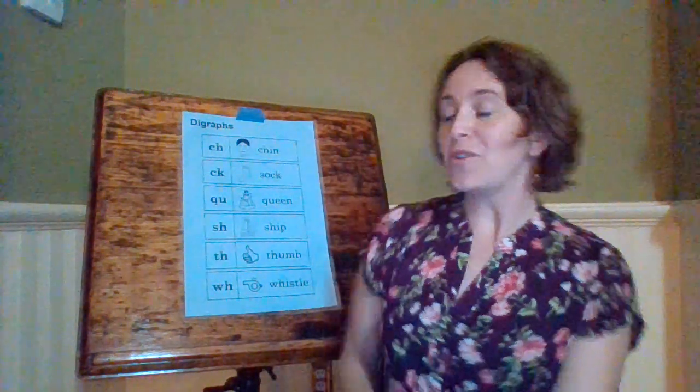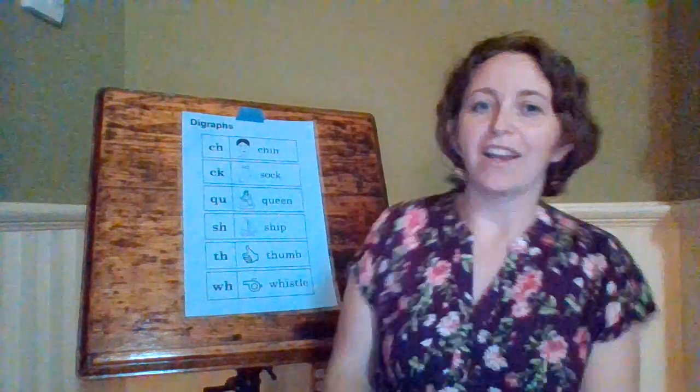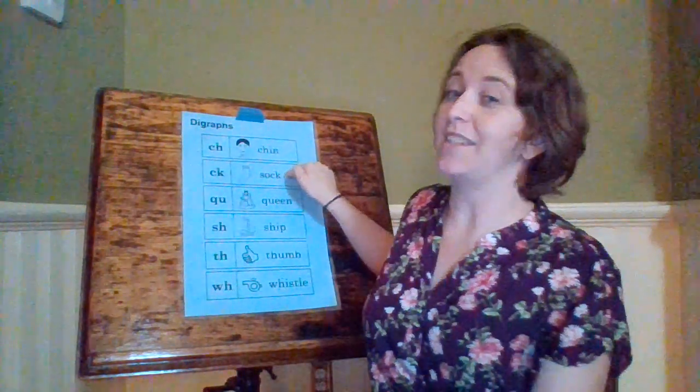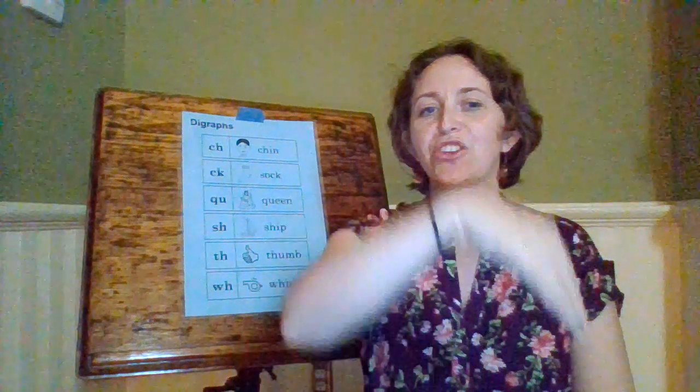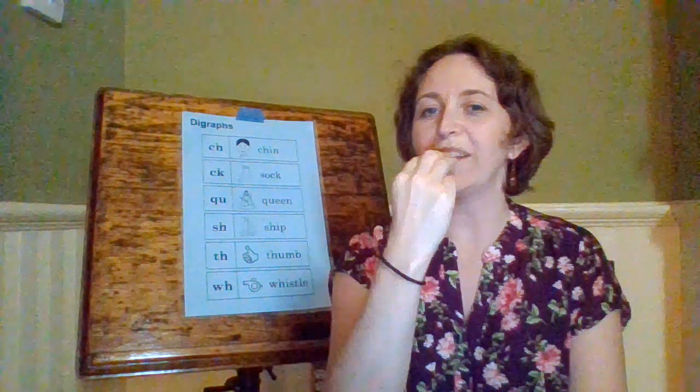So one last time, I'm going to go through our digraph dance moves. I'm going to skip over our CK because it doesn't get a dance move, it's at the end of a word, but the rest of them I will do. CH, chin, CH, QU, queen, Q, SH, ship, SH, TH, thumb, and WH, whistle, WH.